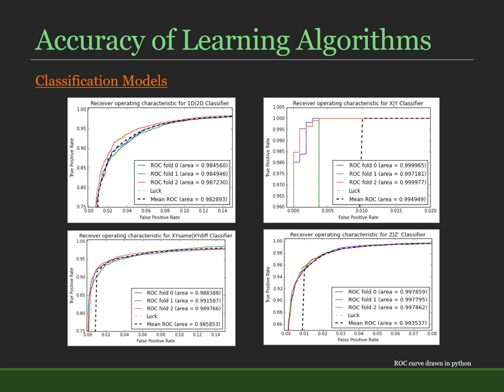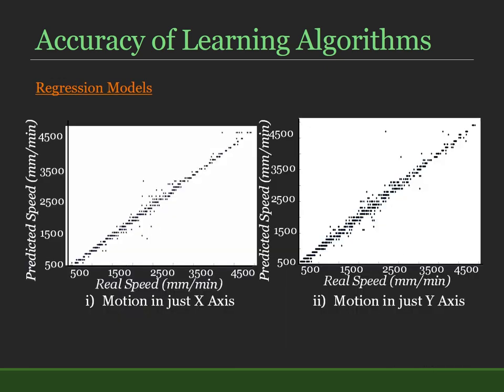The accuracy of the reconstructed object depends on the accuracy of the different learning algorithms. For classification models, we have obtained high true positive rates. Whereas for the regression models, the mean square error of the learning algorithms is very low.